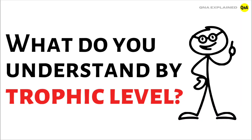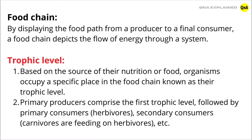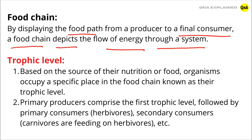What do you understand by Trophic Level? First we see Food Chain. By displaying the food path from a producer to a final consumer, a food chain depicts the flow of energy through a system.